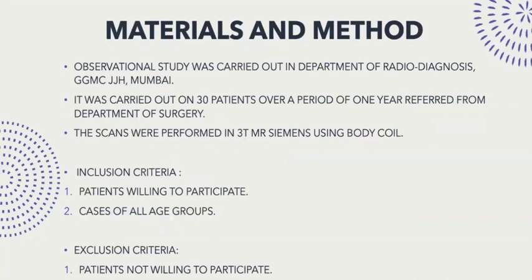Materials and Methods. An observational study was carried out in the Department of Radiodiagnosis at our institute. It was carried on 30 patients over a period of one year referred from the Department of Surgery. The scans were performed on a 3T MR machine using a body coil. Inclusion criteria: patients willing to participate in the study, including cases of all age groups. Exclusion criteria: patients not willing to participate and those having claustrophobia or any other contraindication related to MRI.